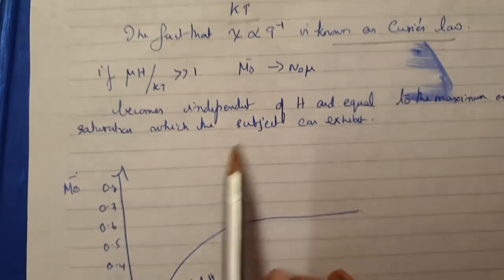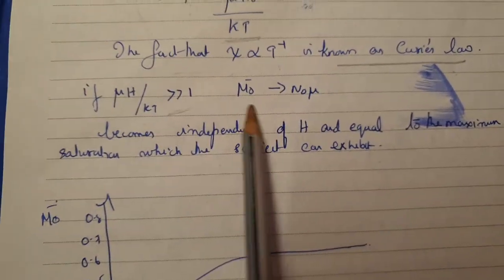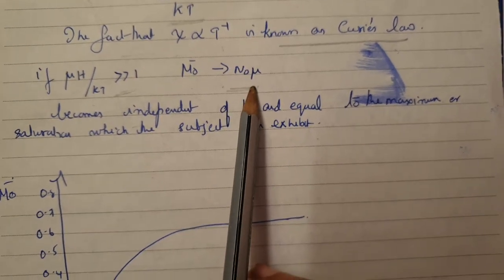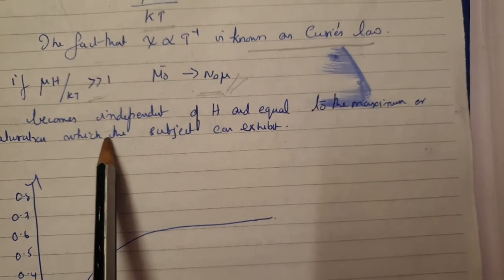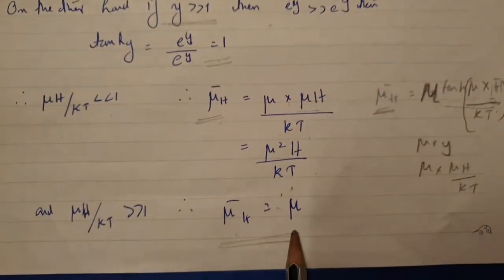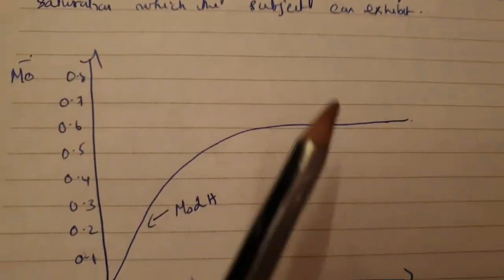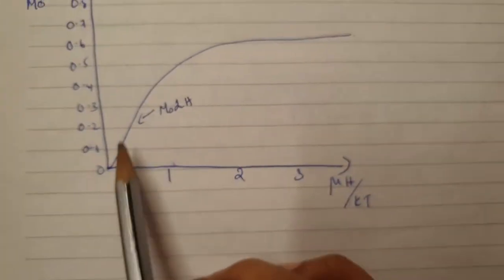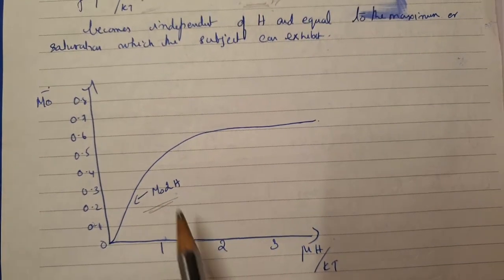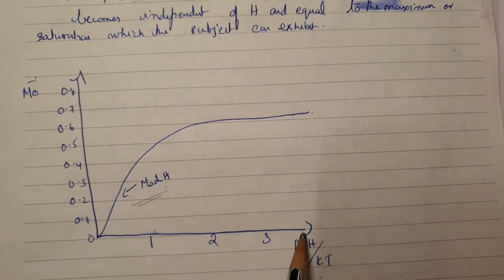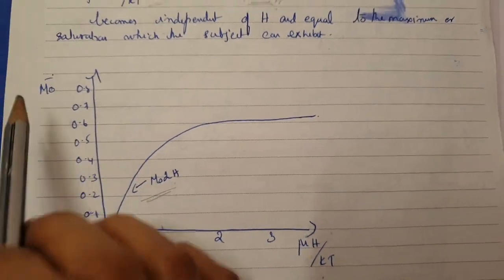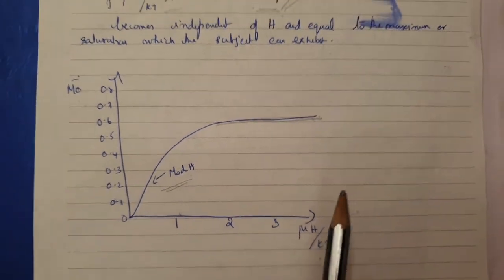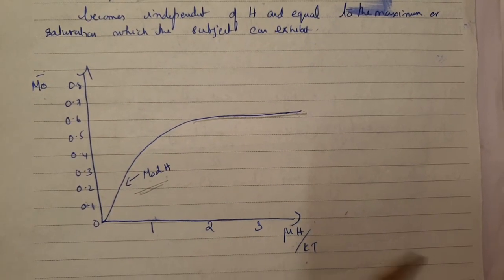When μH/kT is much greater than 1, M0 = n0·μ, which becomes independent of H — the magnetization is saturated. When μH/kT is much less than 1, M0 is dependent on H and follows Curie's law. Beyond the saturation point the magnetization reaches a maximum. This is paramagnetism as an example of the canonical distribution. Thank you.